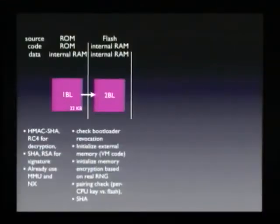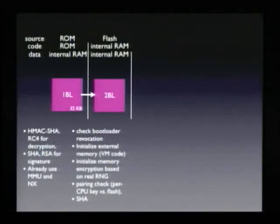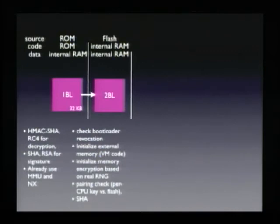The boot ROM loads the second-stage boot loader from flash, checks the signature, and runs it. The second-stage boot loader runs from internal RAM, and the first thing it checks is boot loader revocation. If a boot loader turns out to be buggy, Microsoft can update it and burn a fuse, and the old boot loader will check whether it was revoked. The revocation check is built into the boot loader itself and is done quite early in the process.